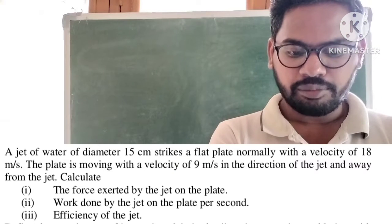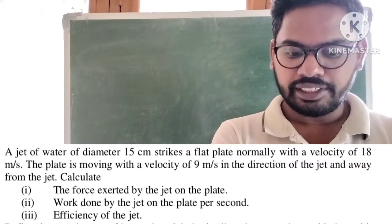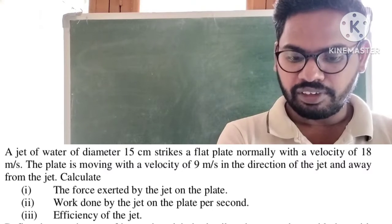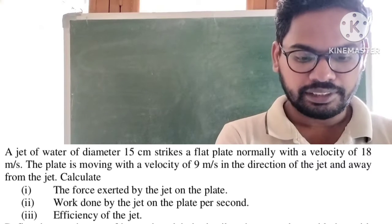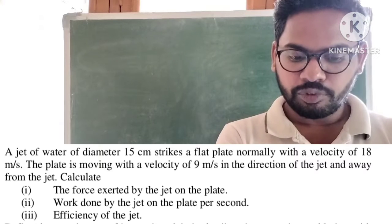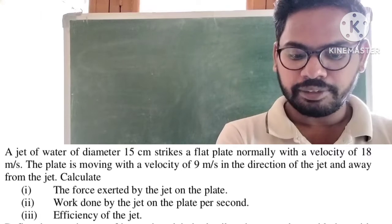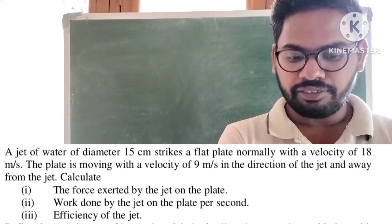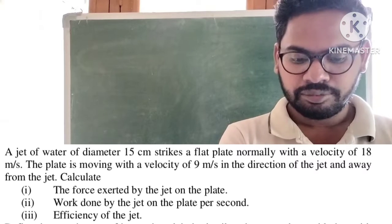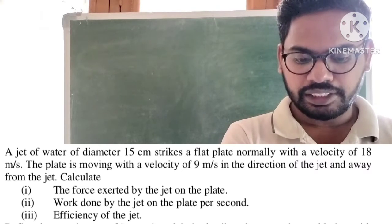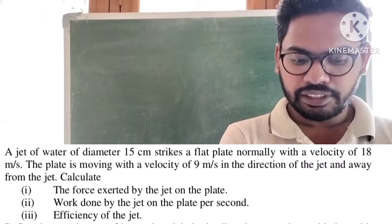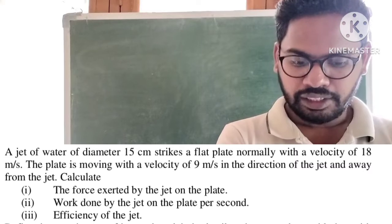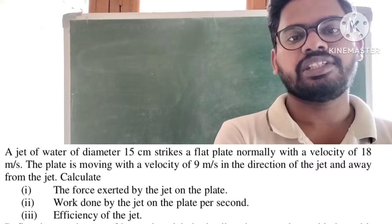A jet of water of diameter 15 cm strikes a flat plate normally with a velocity of 18 m per second. The plate is moving with a velocity of 9 m per second in the direction of the jet and away from the jet. Calculate the force exerted by the jet on the plate, the work done by the jet on the plate per second, and the efficiency of the jet.